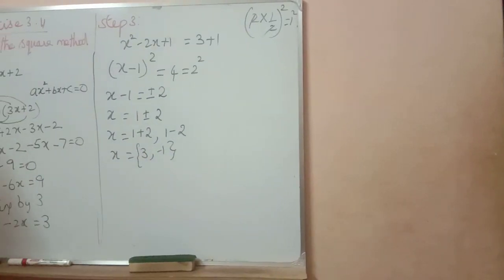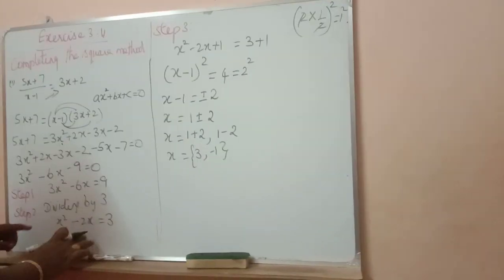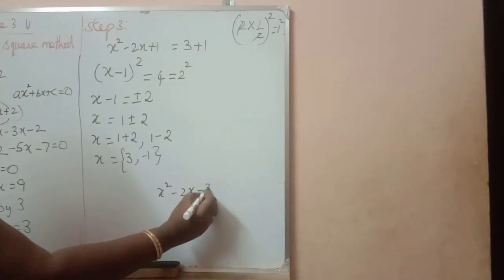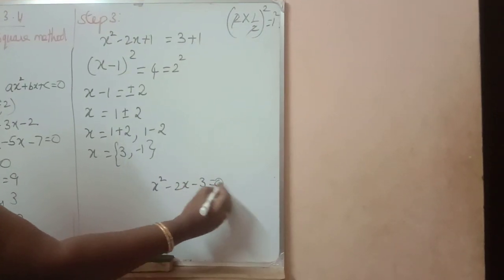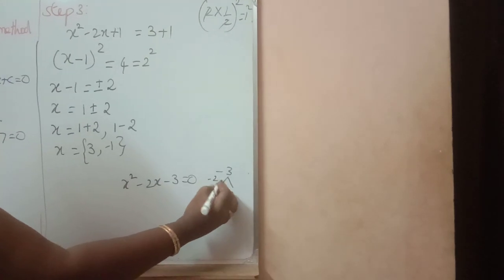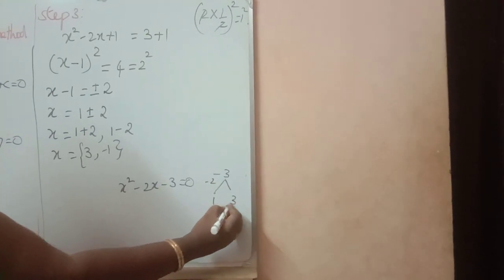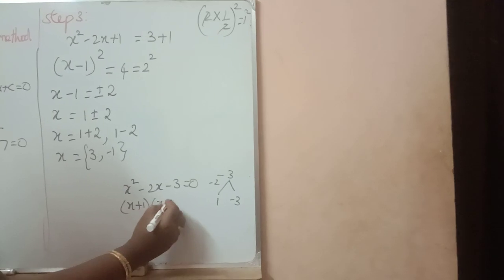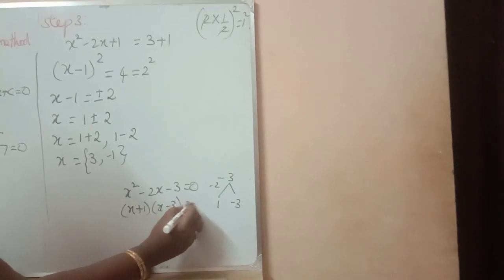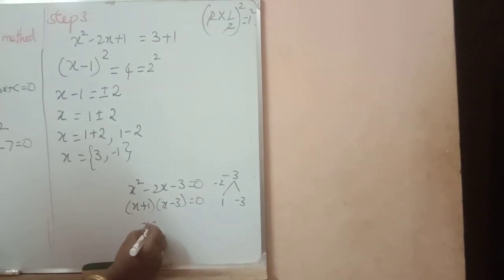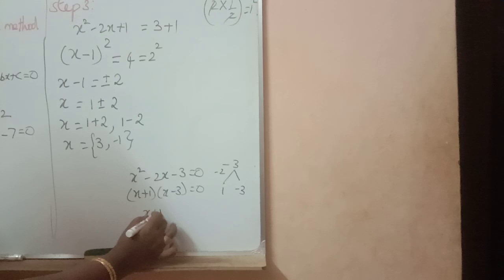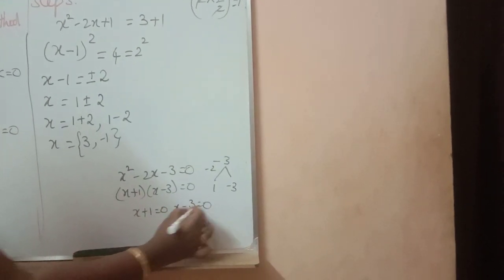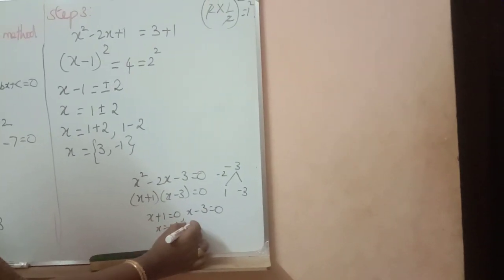This is the solution. If you have doubt, we can write x square minus 2x minus 3 equal to 0. If you factorize: 1 and 3, product is 3. So minus will come. x plus 1, x minus 3 equal to 0. x plus 1 equal to 0, x minus 3 equal to 0. x equal to minus 1, x equal to 3 — we get the same answer.